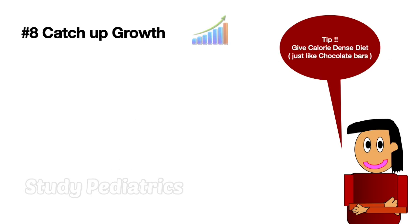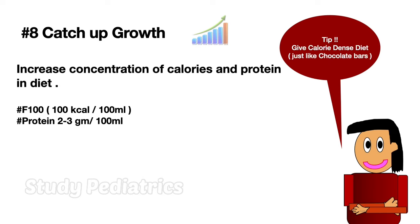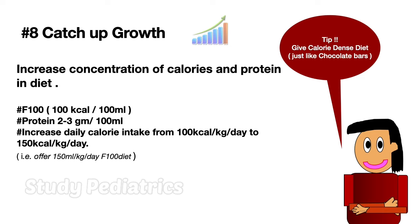Coming to catch-up growth: mostly 99% of children take up the feed by 3 days, though some may take 1 day and some 4 days — there is no strict rule. Catch-up growth means increasing the concentration of calories and protein in the diet. We use F100 — 100 kilocalories per 100 ml — in which protein is doubled to 2 to 3 grams per 100 ml, and daily calorie intake is increased from 100 to 150 kilocalories per kg per day. We offer 150 ml per kg per day as F100 diet.